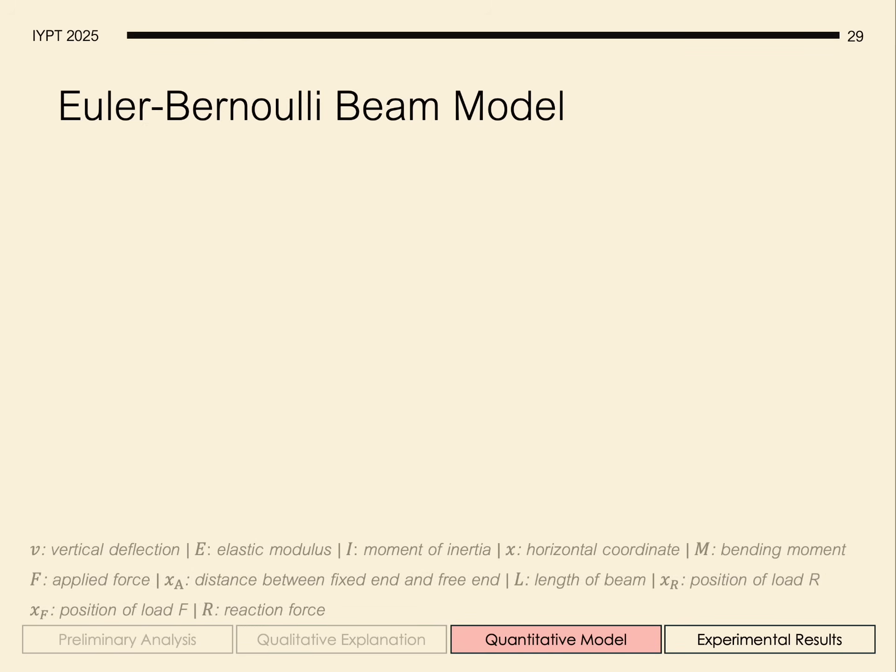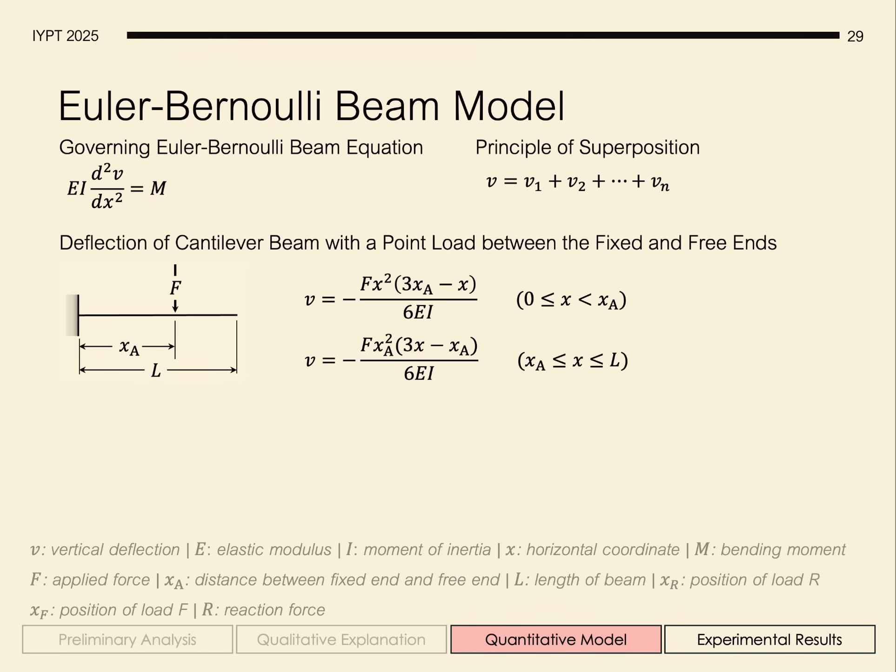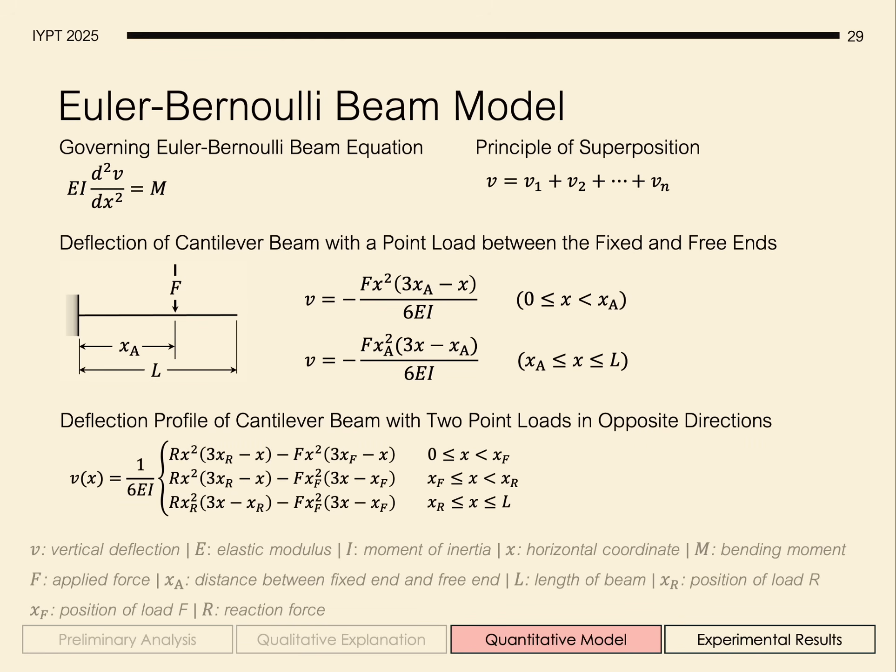To calculate the initial total elastic potential energy, we consider the simplified Euler-Bernoulli beam model, and from the principle of superposition, and standard results of the deflection of a cantilever beam with a point load between the fixed and free ends, we can easily obtain the deflection profile of a cantilever beam when two point loads act in opposite directions.